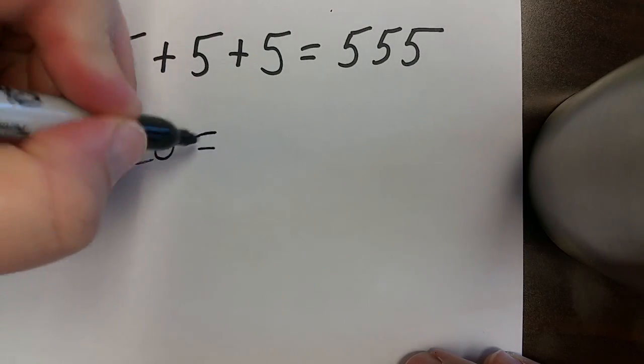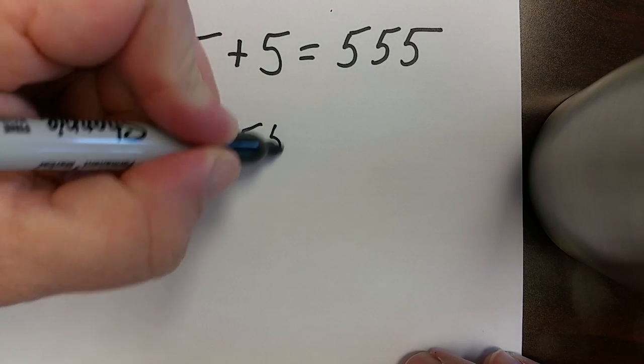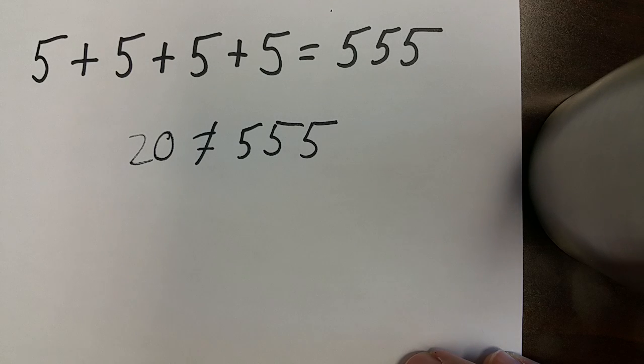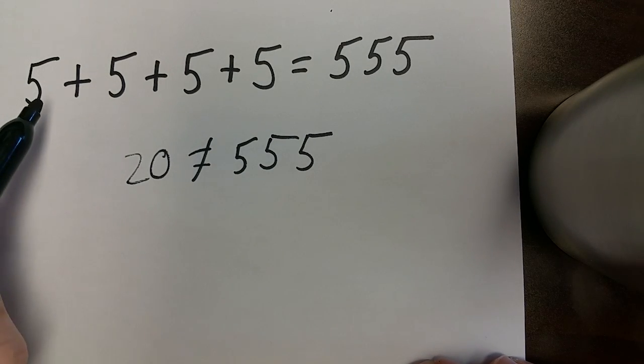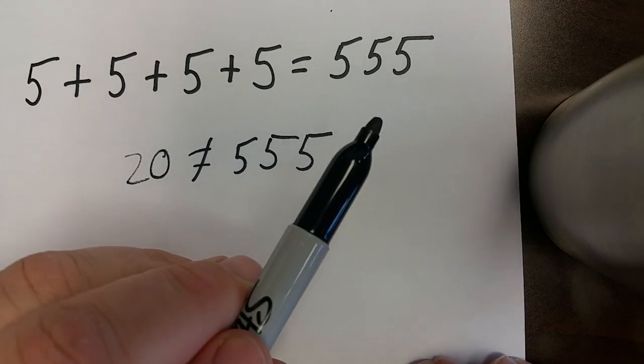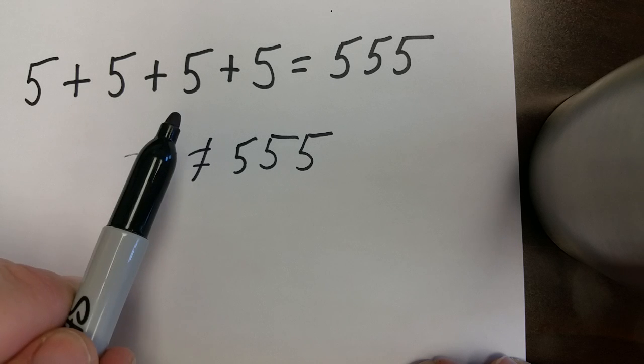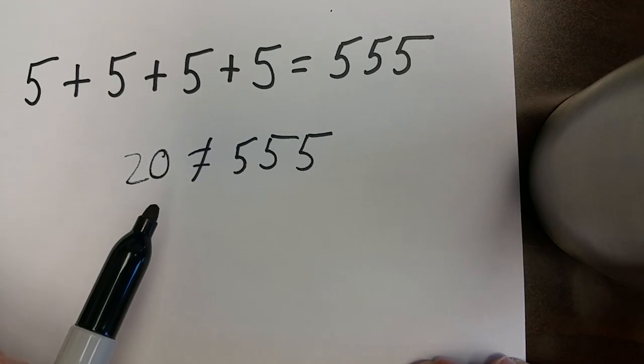And as we know, 20 is not equal to 555. So we have to look back up to this problem. And I said by adding one line, you could make this statement so that this side is equal to this side.